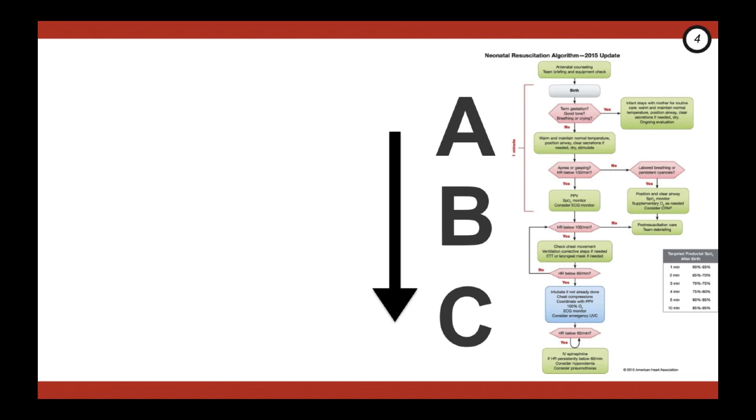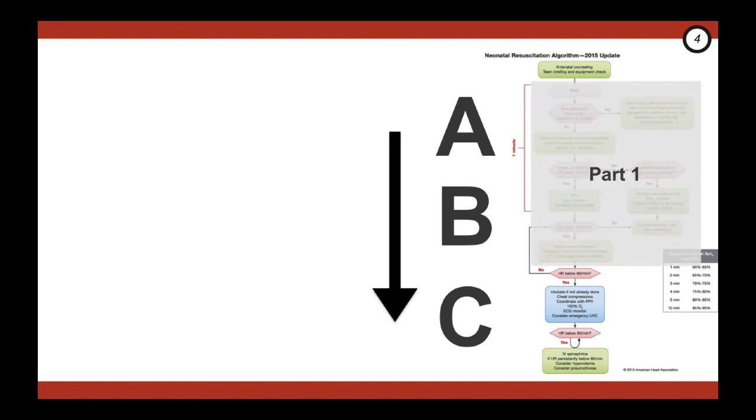Let's review from episode one. We looked at the overall picture from the 2015 NRP algorithm. It follows the ABC approach with a focus on ventilation and oxygenation, then moving to circulation. Today we're going to focus on circulation. We've again broken it down into boxes that represent decision points.